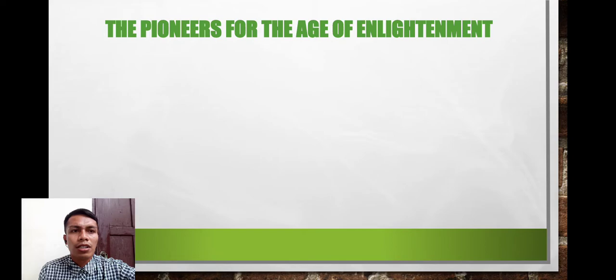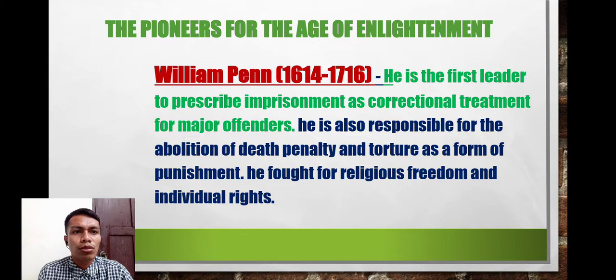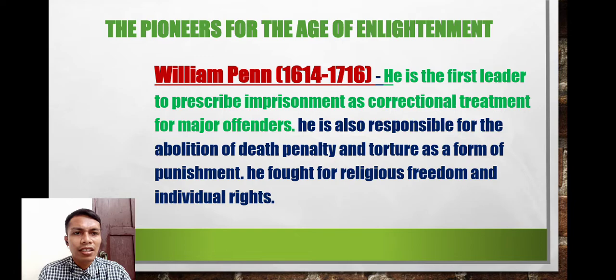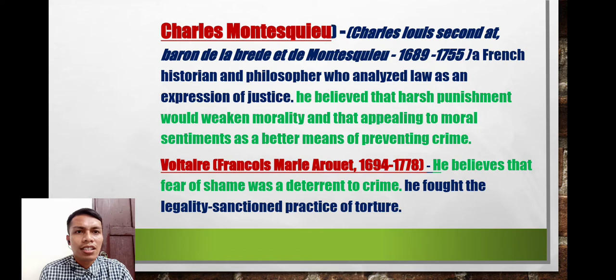Among the pioneers of the Age of Enlightenment, William Penn, around 1614 to 1716, was the first leader to prescribe imprisonment as correctional treatment for major offenders. He was also responsible for the abolition of the death penalty and torture as forms of punishment, and he fought for religious freedom and individual rights. Charles Montesquieu was a French historian and philosopher who analyzed law as an expression of justice, believing that harsh punishment weakens morality.